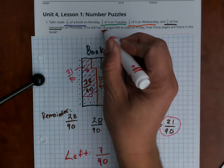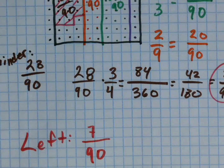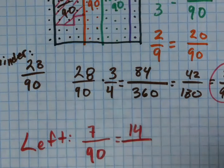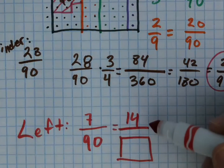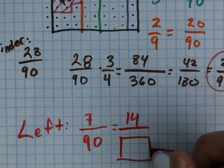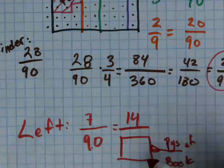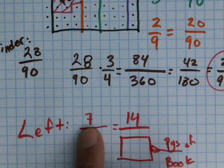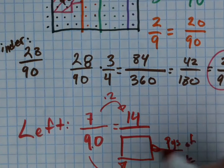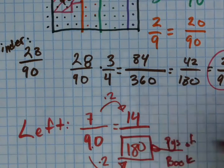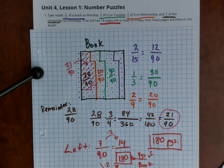We know there are 14 pages left to be read, so 7 out of 90 equals 14 out of some number. This fraction of what's left equals the pages in the book. To go from 7 to 14, I'm just multiplying by 2, so I also do 90 times 2, which is 180 pages. The book has 180 pages — and that's how the visual method works.